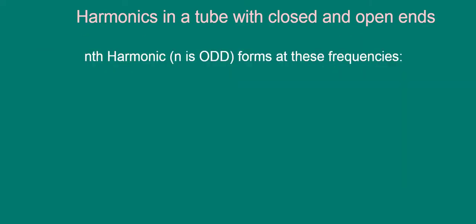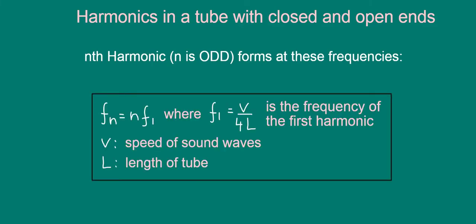In general, the nth harmonic, where n is an odd whole number or integer, forms at n times the frequency of the first harmonic. So fn here represents the frequency of the nth harmonic.